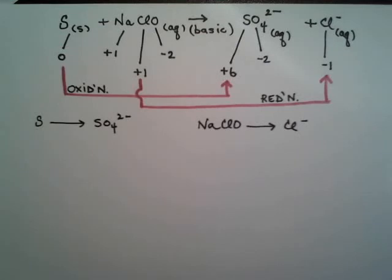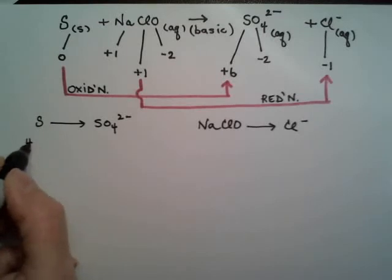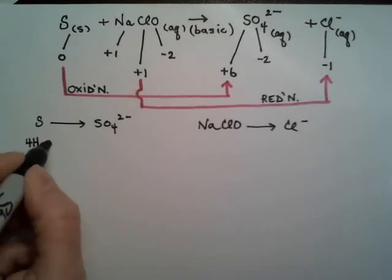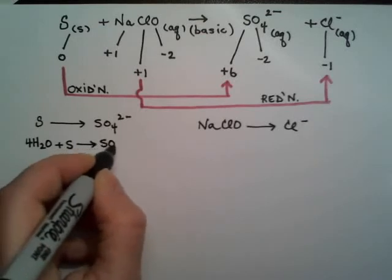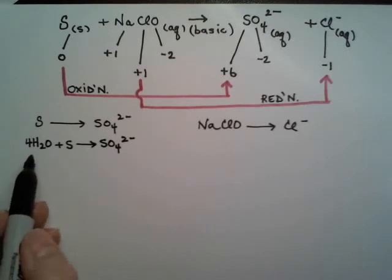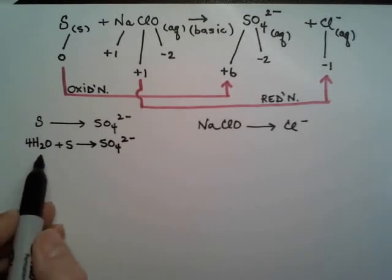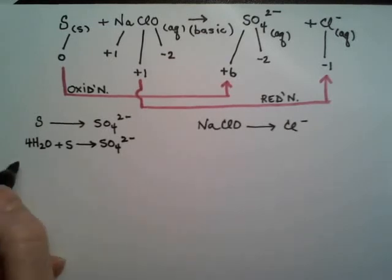Balance all the atoms except O and H. Sulfur is already balanced. We can move on to oxygen. I have four, so I need four water. I've just introduced hydrogen. That's the next atom I want to balance. Eight hydrogen, so I need eight H-plus on this side.